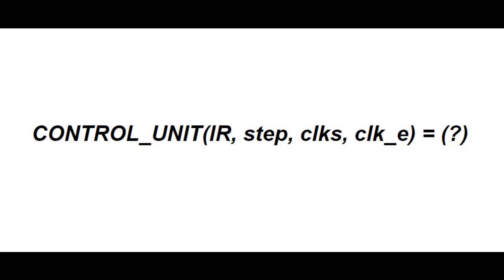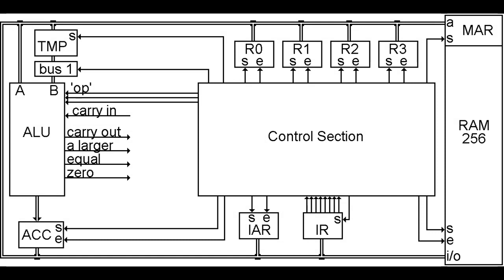Now for outputs, let's go back to that first diagram from page 112. There are a lot of outputs from the control section: for each of the R0, R1, R2, R3, R4, IAR, and ACC registers we have enable and set signals; for RAM there is RAM enable, RAM set, and MAR set; for the ALU we have TMP set, bus 1, as well as the three ALU operation signals; and finally there is IR set. That gives us the following function with the outputs rearranged to match what we have on our project board.